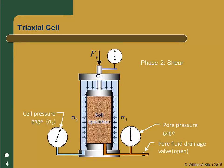In actual lab testing, there is a phase that precedes the consolidation phase: the saturation phase. It is critical that the soil be 100% saturated during the test, and the details of getting a specimen to 100% saturation are an important part of the testing. However, for purposes of our discussion, we will simply assume that the specimen is at 100% saturation before consolidation.